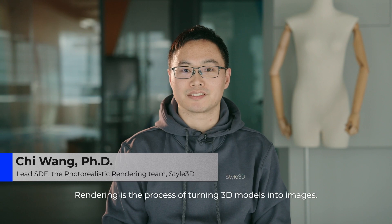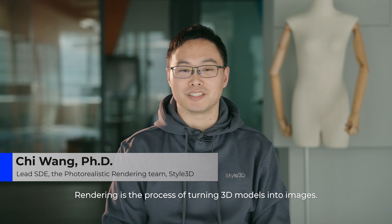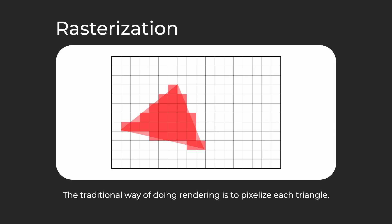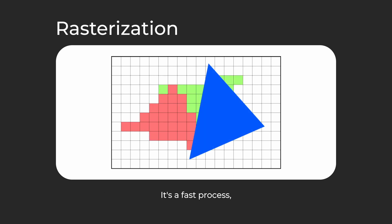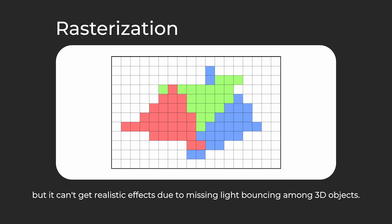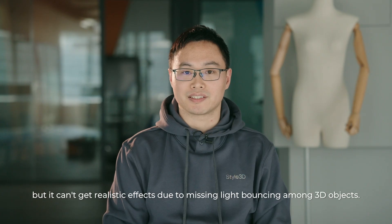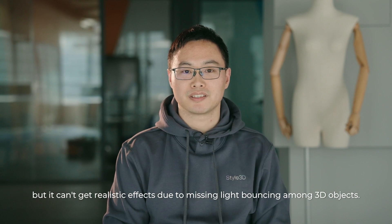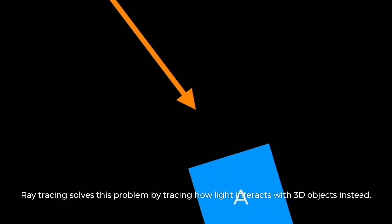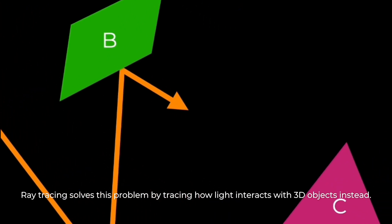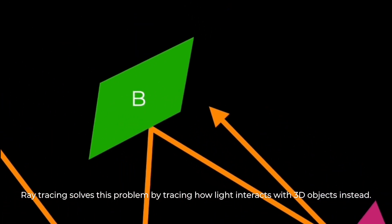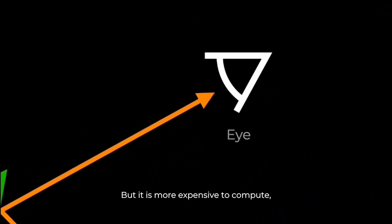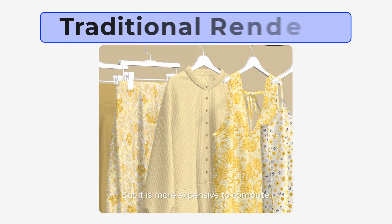Rendering is a process of turning 3D models into images. The traditional way of doing rendering is to pixelize each triangle. It is a fast process, but it can't get realistic effects due to missing light bouncing among 3D objects. Raytracing solves this problem by tracing how light interacts with 3D objects instead, but it is more expensive to compute.